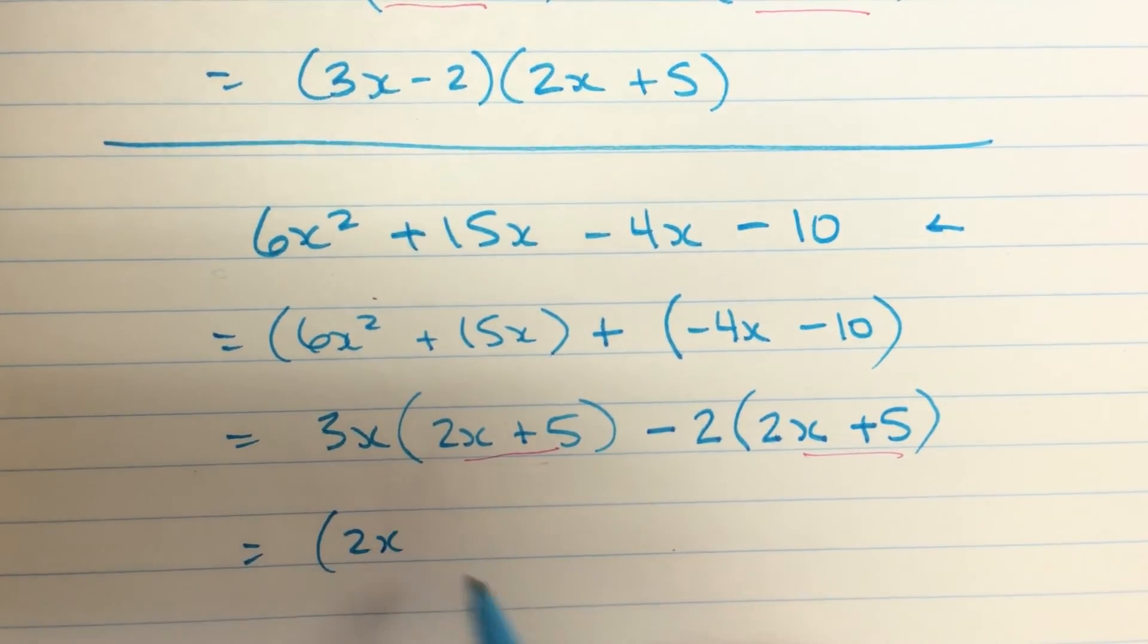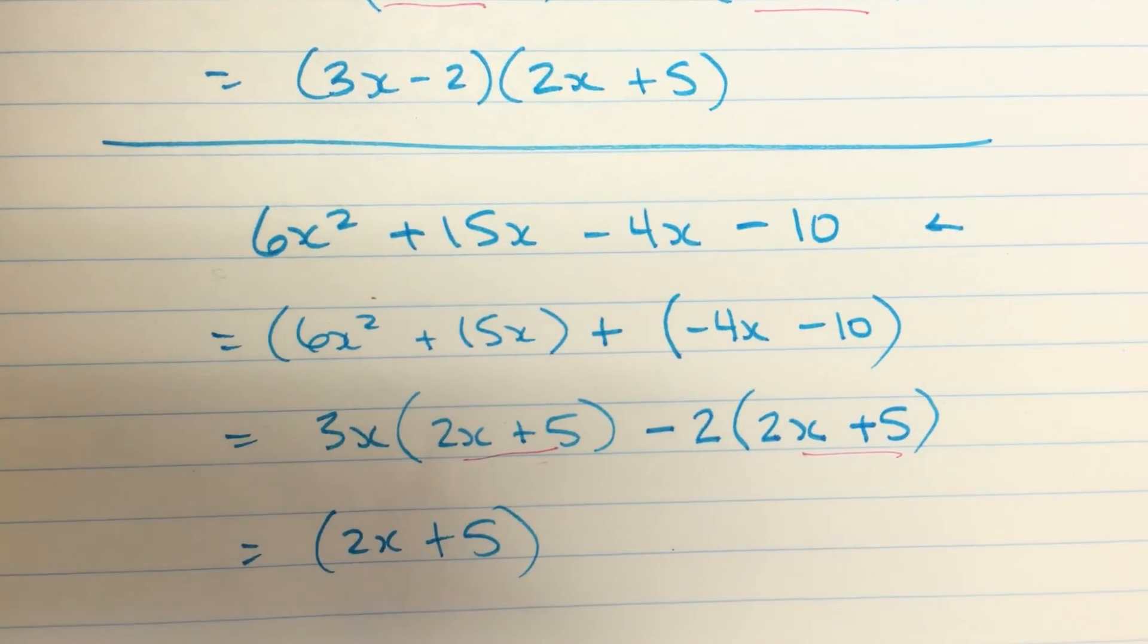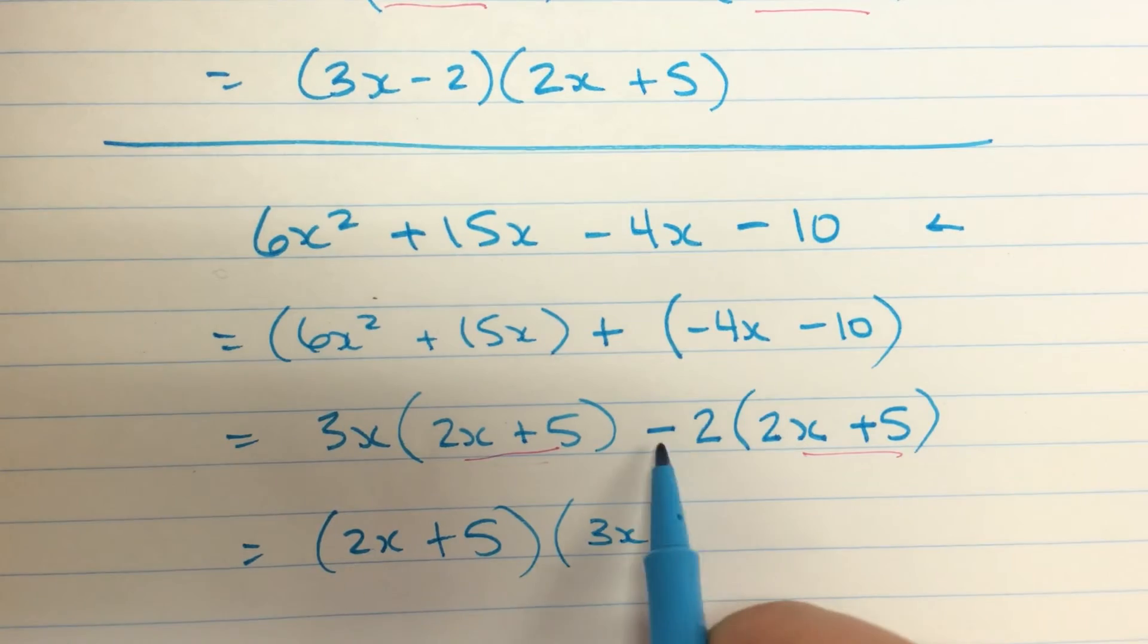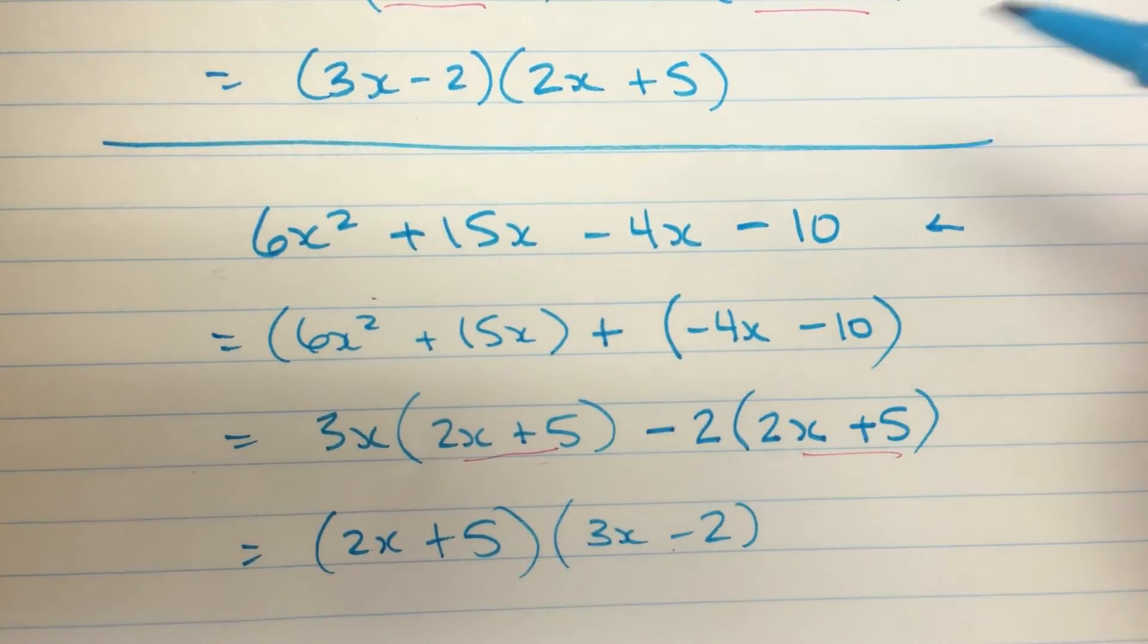2x plus 5. When I factor that out, here I'm left with a 3x. And here I'm left with a minus 2. And if you look up above here, that's the same expression. We've just written the factors in a different order.